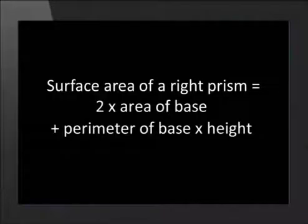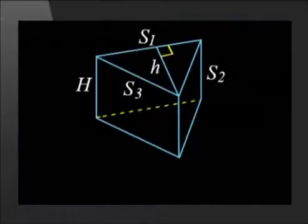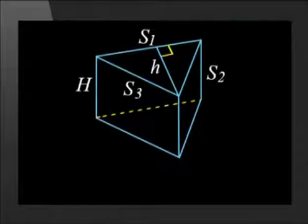Let's revise the general formula to find the total surface area of a prism. The general formula for surface area is 2 times the area of the base plus the perimeter of the base times the height of the prism. In this case, the base is a triangle, so the surface area will be 2 times the area of the triangle plus the perimeter of the triangle times the height of the prism.